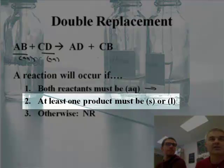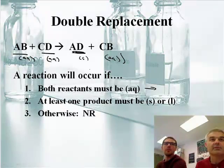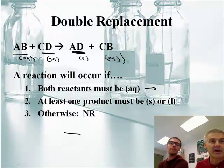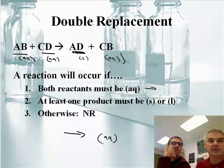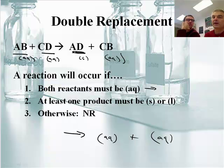Number two, at least one product must be S or L. Okay. So this product, if this is S and this is AQ, it works. If they're both AQ, it doesn't work. Right, so if you have a product and it makes an AQ plus another AQ, there is no reaction. You would just write NR. Okay?